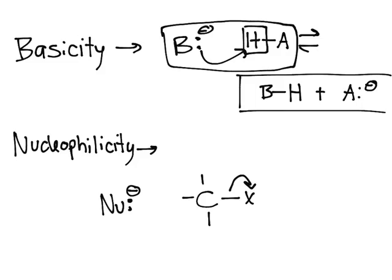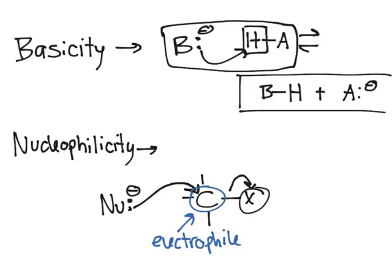And so the nucleophile is going to come in, attack that carbon. And this carbon right here is the electrophile. And remember, nucleophile always attacks electrophile. And so this halogen is going to leave.